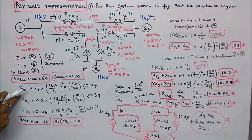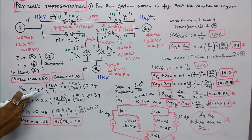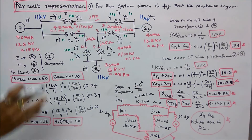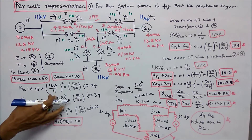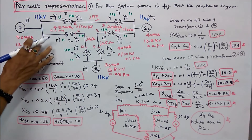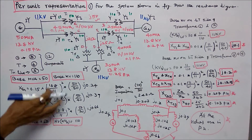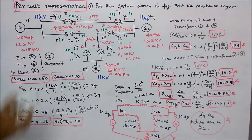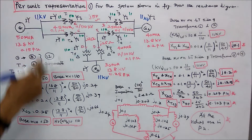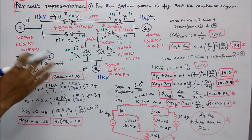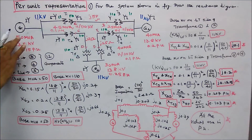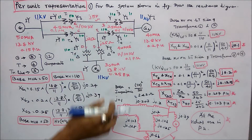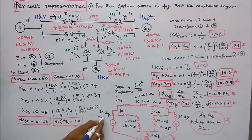Generator 1 per unit reactance = 0.15 × (13.8/11)² × (50/50) = j0.24. This is the new per unit reactance for generator 1.